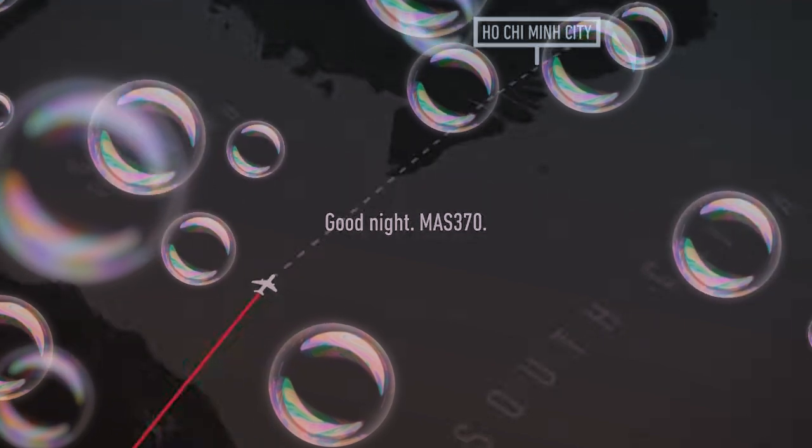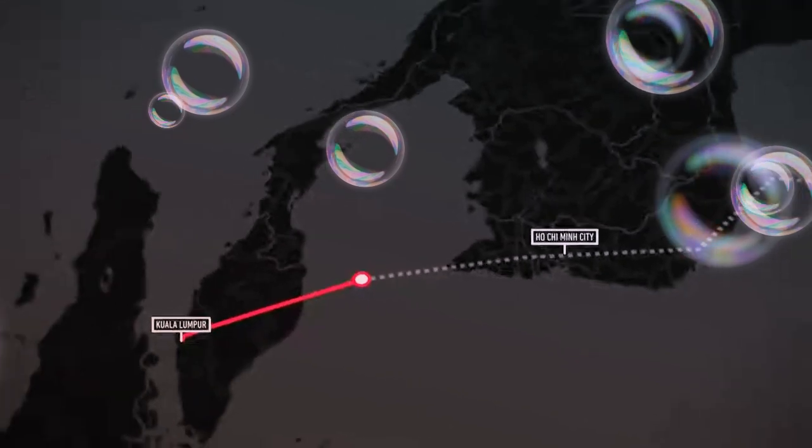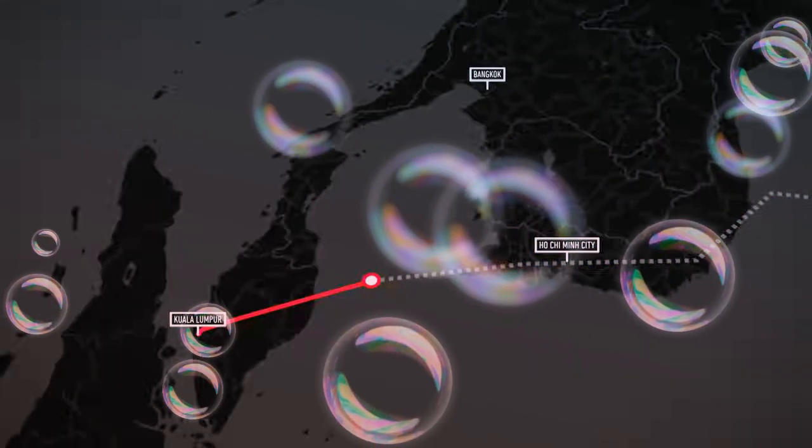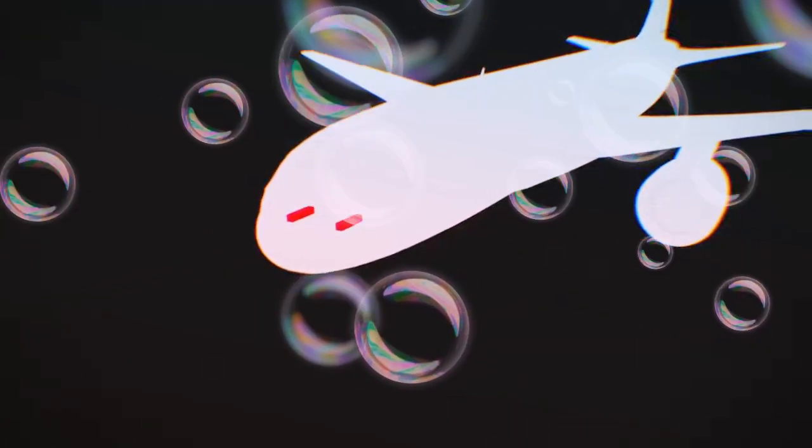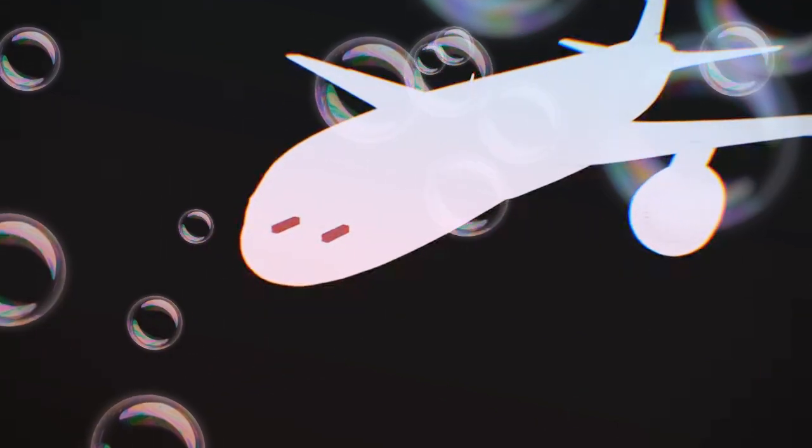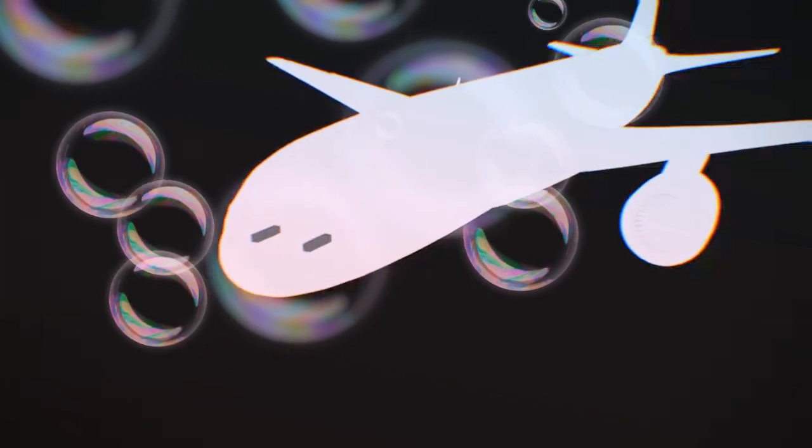One minute and 43 seconds later, the aircraft suddenly vanish from radar screens at Kuala Lumpur, Ho Chi Minh, and Bangkok. This form of positional tracking depends on a signal being emitted by transponders aboard the plane, and so its disappearance would suggest both transponders cease to function, or the system was manually deactivated by someone on board.